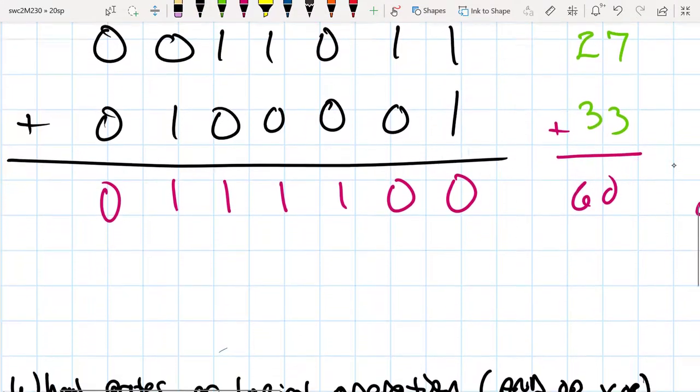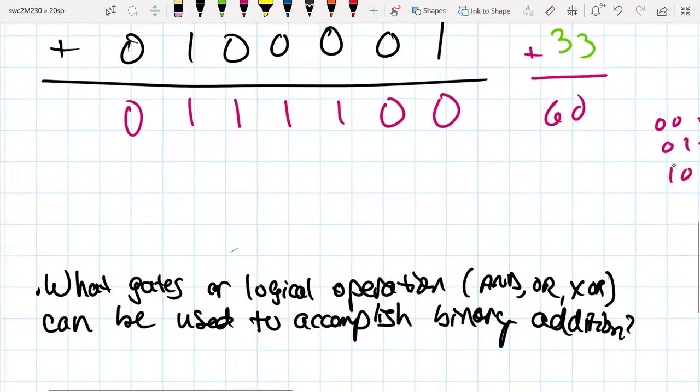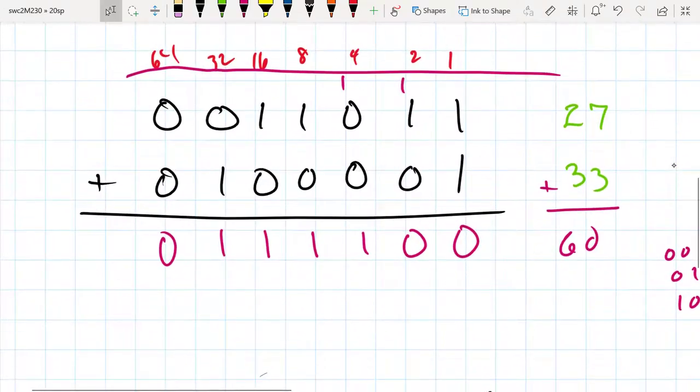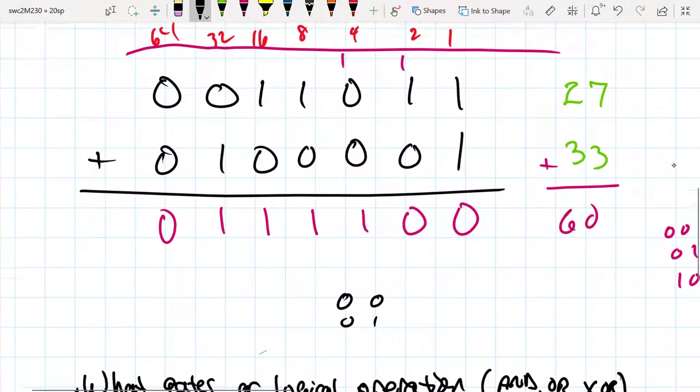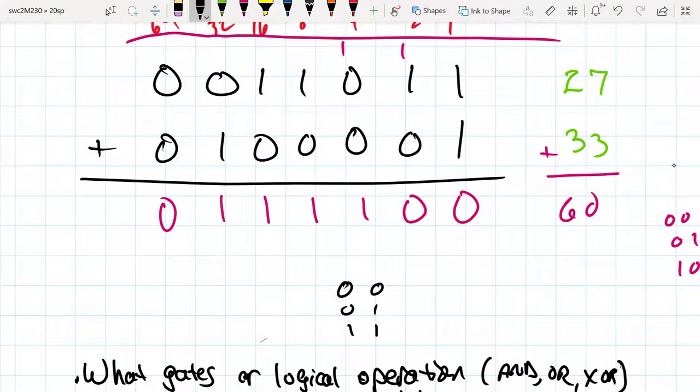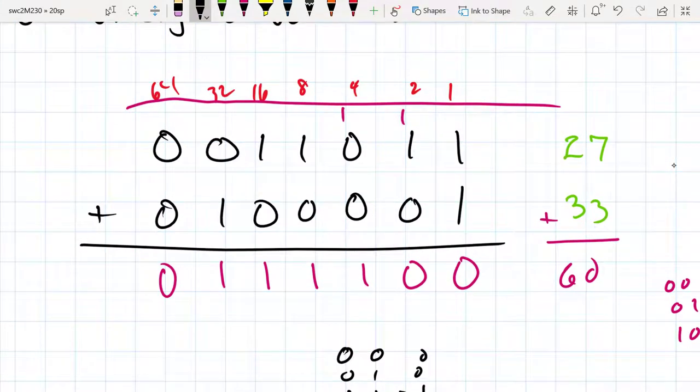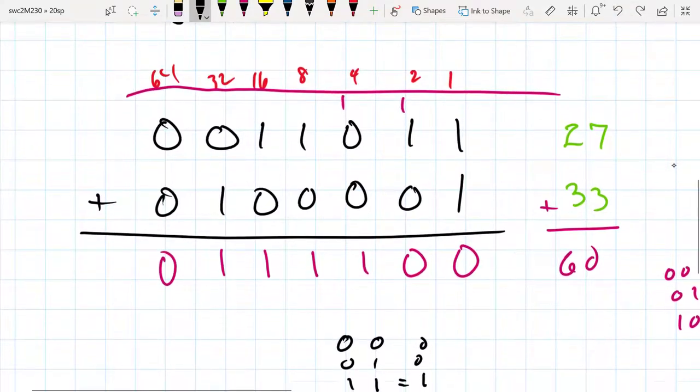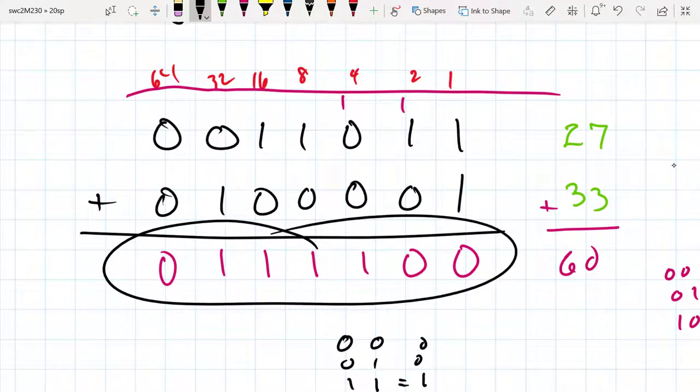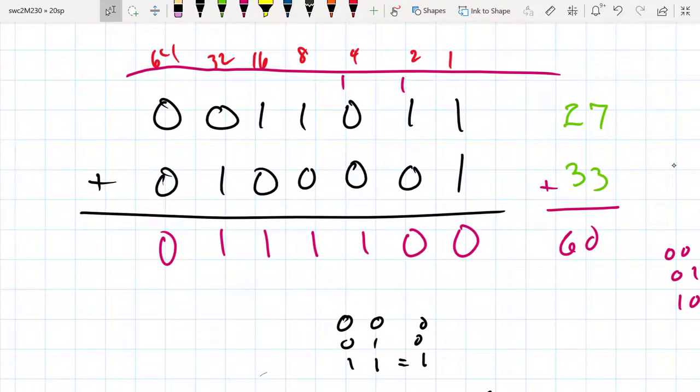When we're anding two bits, there's a truth table associated with the and. The and states that the output is true only if both inputs are true. So that's the only time that an output is true. If you look at this, we get a true here, but we don't have two inputs that are true. So clearly, it doesn't look like an and gate is going to get us a result that would give us the proper sum.